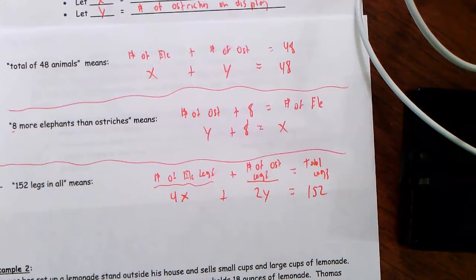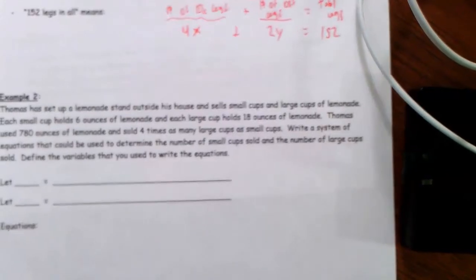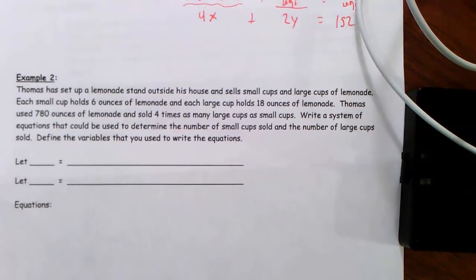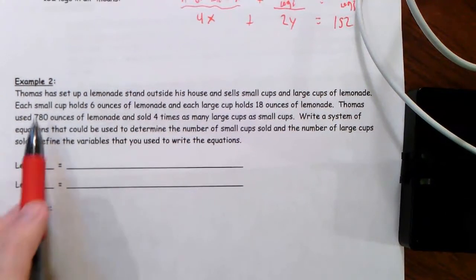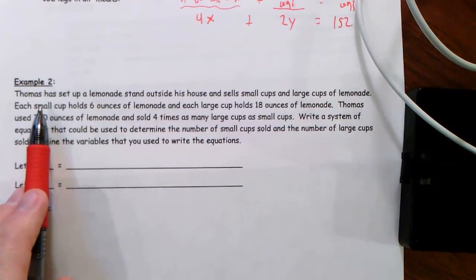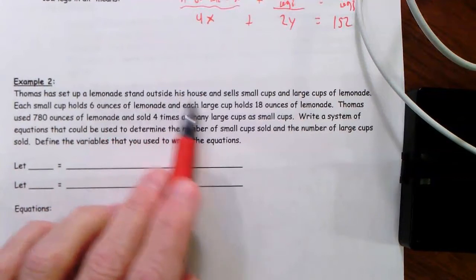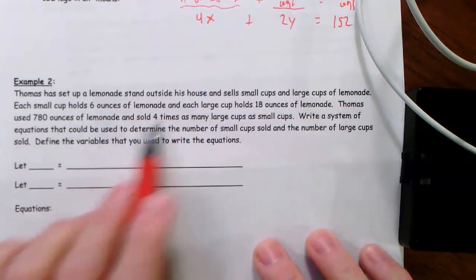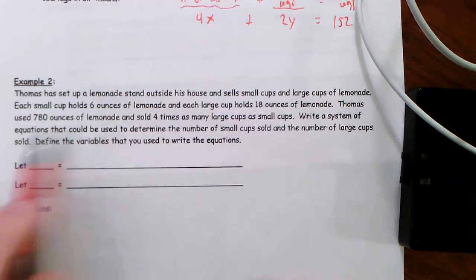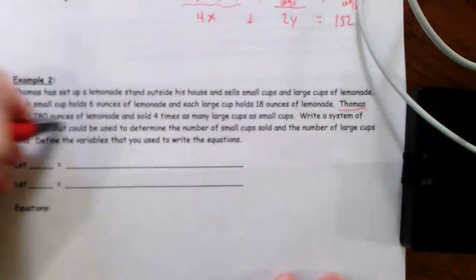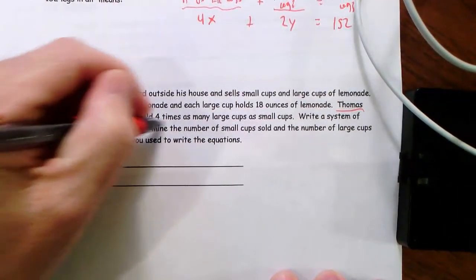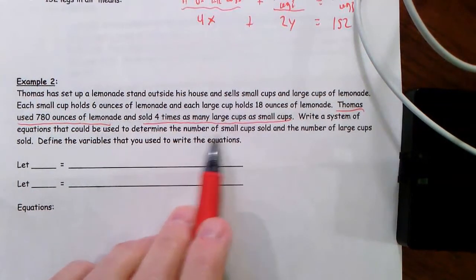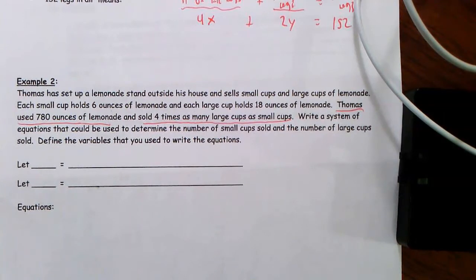I hope you get the idea. We're going to do one example straight from Delta Math. You don't have to solve these today — all you have to do is write the let statements and set up your equations. Thomas has set up a lemonade stand outside his house and sells small cups and large cups of lemonade. Each small cup holds six ounces and each large cup holds 18 ounces. Thomas used 780 ounces, and sold four times as many large cups as small cups. Write a system of equations to determine the number of small cups and large cups sold.